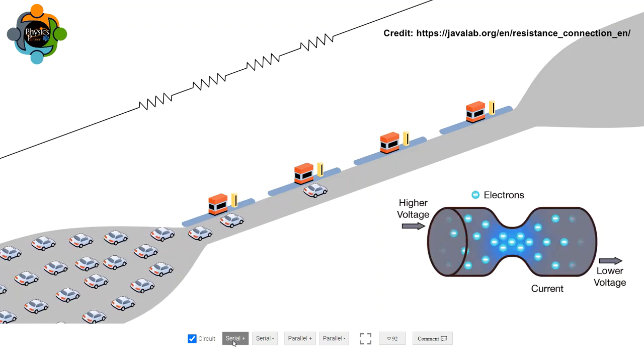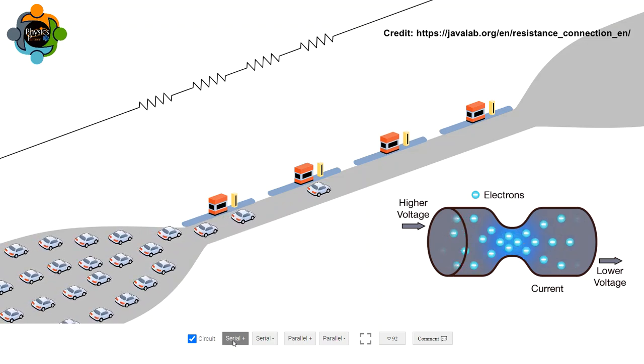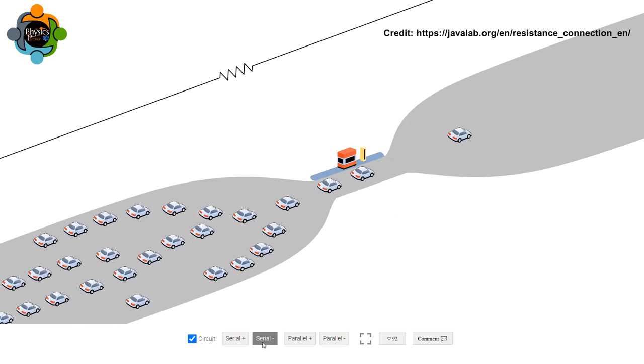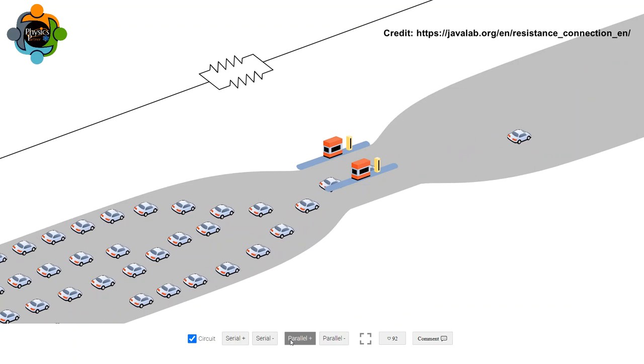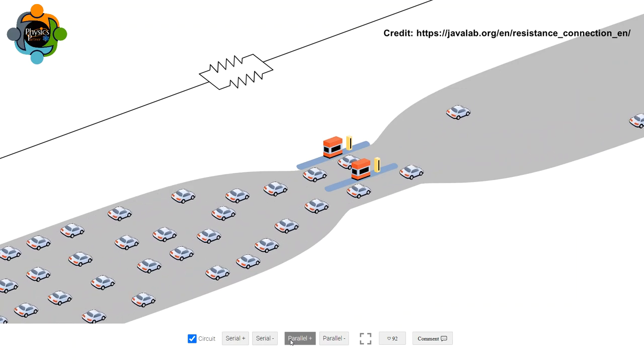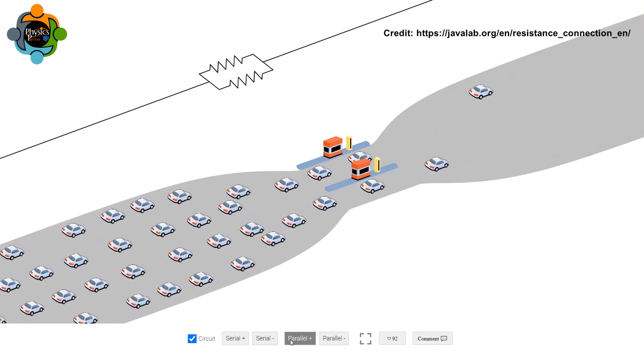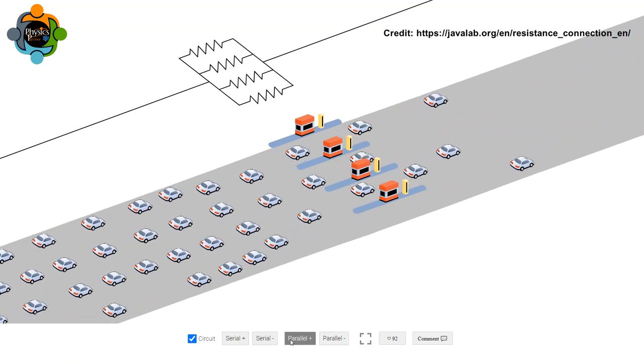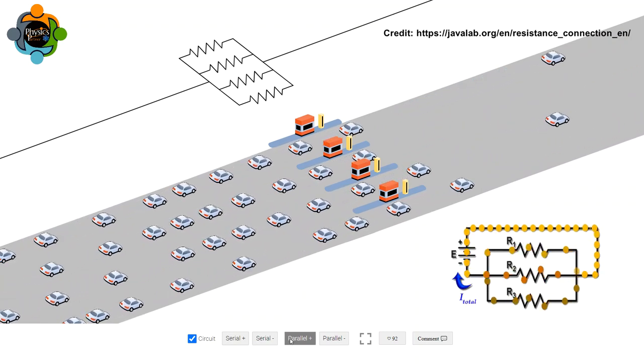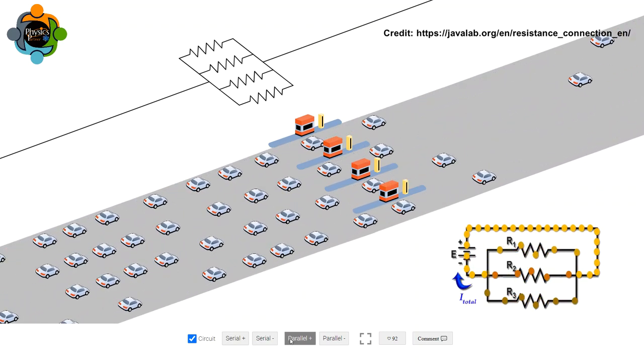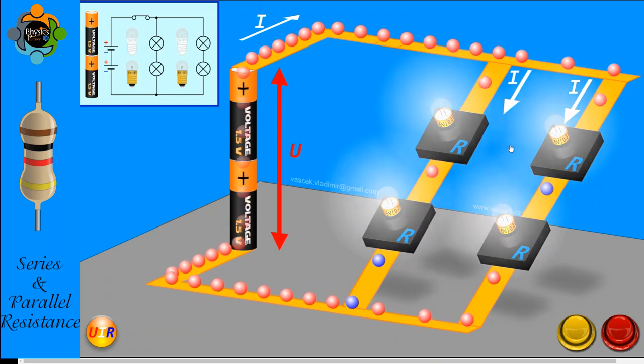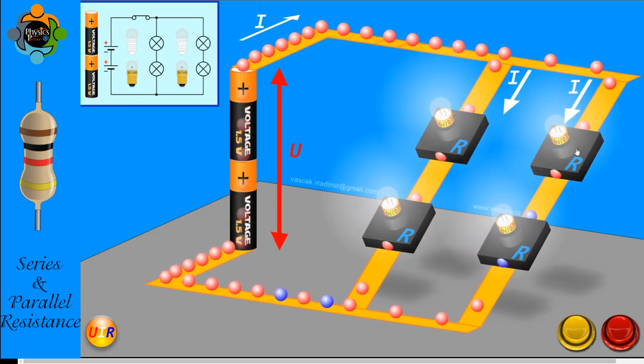On the other hand, what if we arrange our checkpoints differently? Let's place them parallel to each other, each one on a separate lane. Now cars have options. Some go through the first checkpoint, others through the second. Similarly, you can add third and fourth. The overall flow of traffic is smoother and quicker. Similarly, when resistors are connected in parallel, the total resistance decreases. The electrical current has multiple paths to travel through, reducing the overall resistance and allowing more current to flow through the circuit.